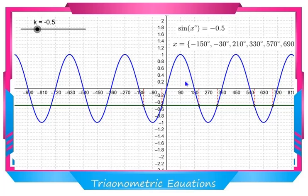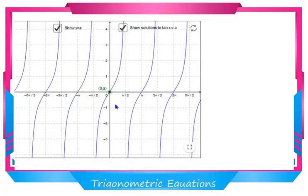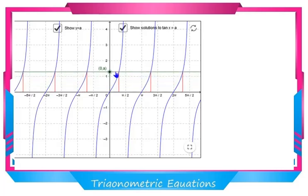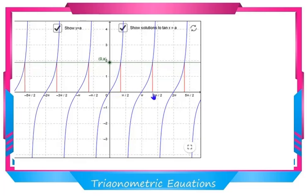Now let us look at the other function, y = tan x. From the graph of y = tan x, every horizontal line cuts the curve, so there are infinitely many solutions — this is the general solution. The solutions between 0 and 2π are called the principal solutions. If A is positive, then θ and π + θ are the two principal solutions, because tan is positive in the first and third quadrants.